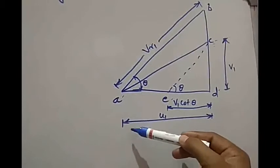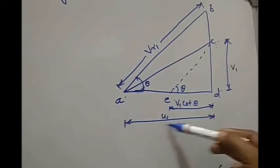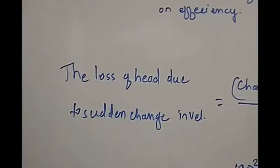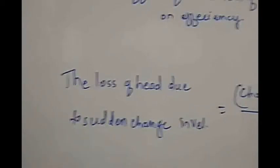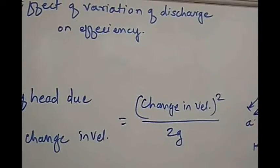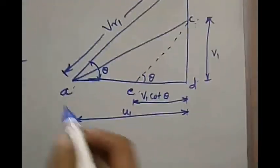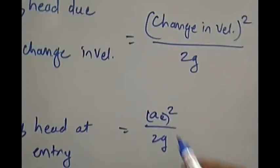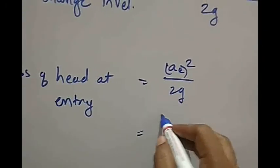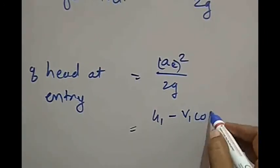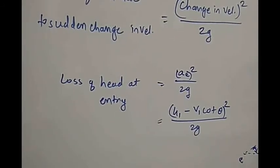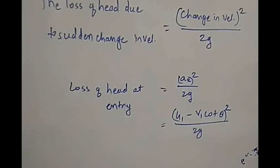In this case, the tangential velocity changes from u1, so there is a loss of tangential velocity causing losses. The loss of head due to sudden change in velocity is given by the change in velocity squared divided by 2g, that is v²/2g. The change in velocity is the tangential component, so the loss is written as (u1 − Vf1·cotθ)² / 2g. This is the loss of head at entry, and this is the effect of variation of discharge on efficiency.